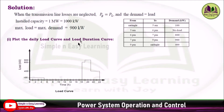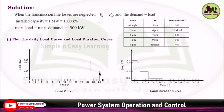For the load duration curve, assemble this load variation in descending order. The descending order is 900, then 800, 400, then 100. So first 900 kilowatt for 2 hours, then 800 kilowatt for 1 hour, then 400 kilowatt for 3 hours, and the remaining 100 kilowatt for 5 hours. This is how you draw the load duration curve.